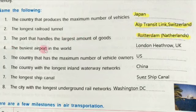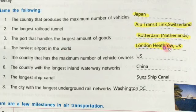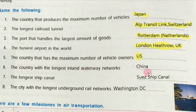The busiest airport in the world is in the UK, and its name is London Heathrow — this is the busiest airport. Then the country that has the maximum number of vehicle owners is the USA. The country with the longest inland waterway network is China.